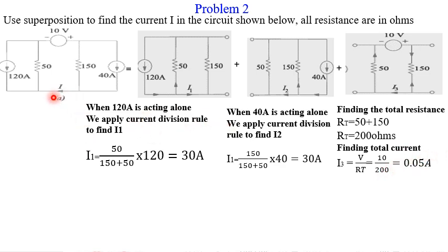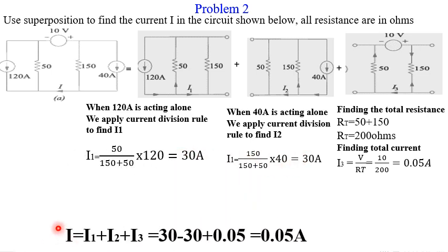Now the tricky part — checking directions. Our reference direction for I was established, so any current going against it becomes negative. I1 is going against our direction so it becomes negative, while I2 goes in our direction. Adding them up: I equals negative I1 plus I2 plus I3, which is 30 minus 30 plus 0.05. The 30s cancel out, giving a total current I of 0.05 amps through this branch when all three sources are acting. I will simulate this to confirm the result.